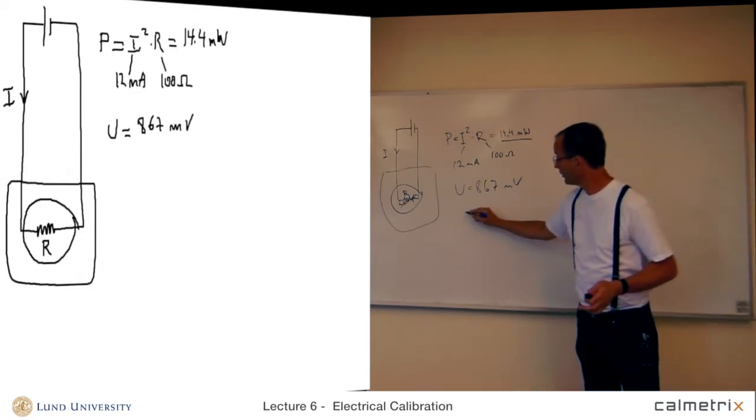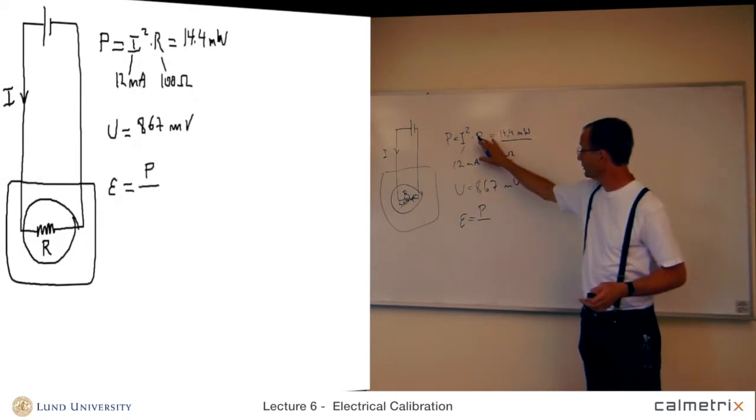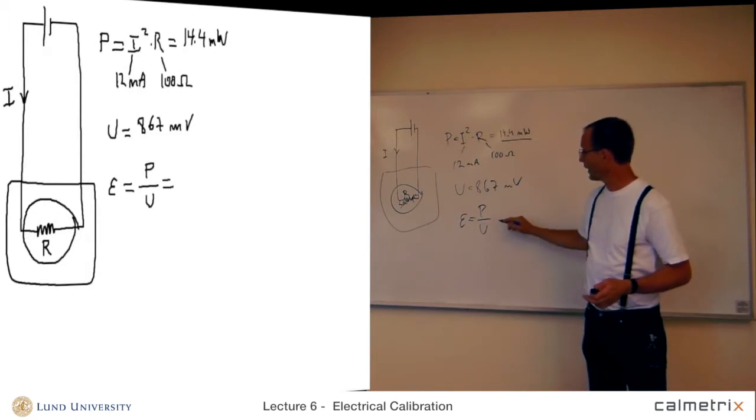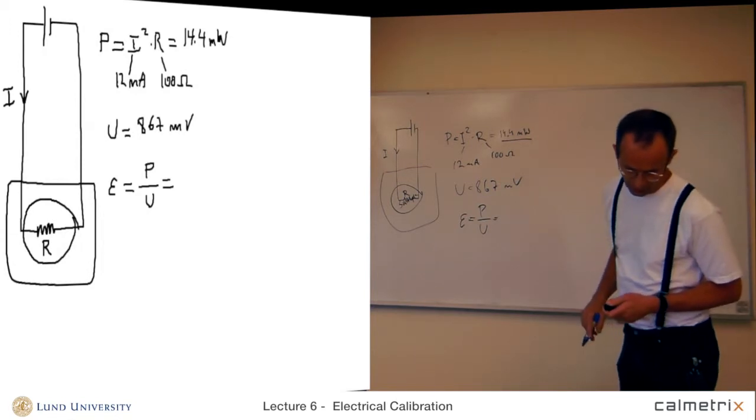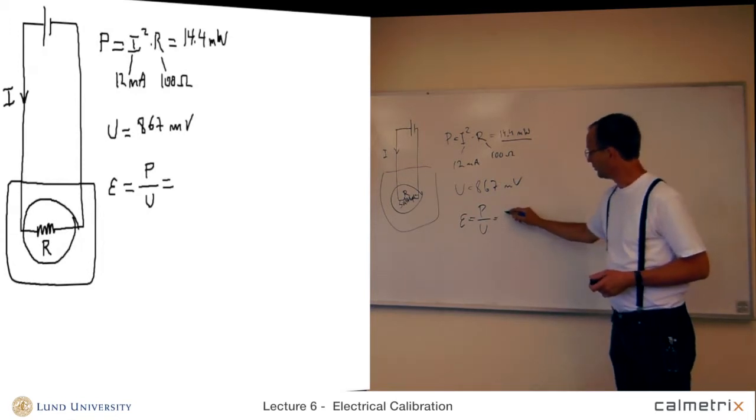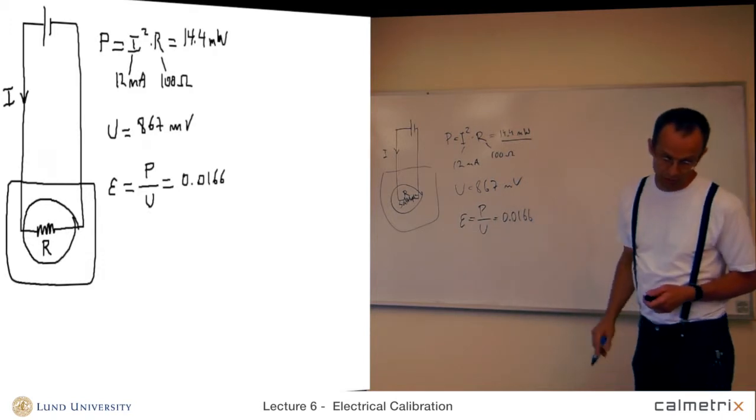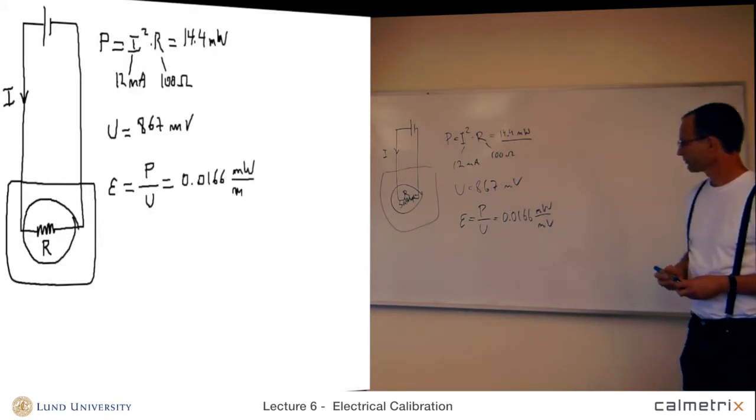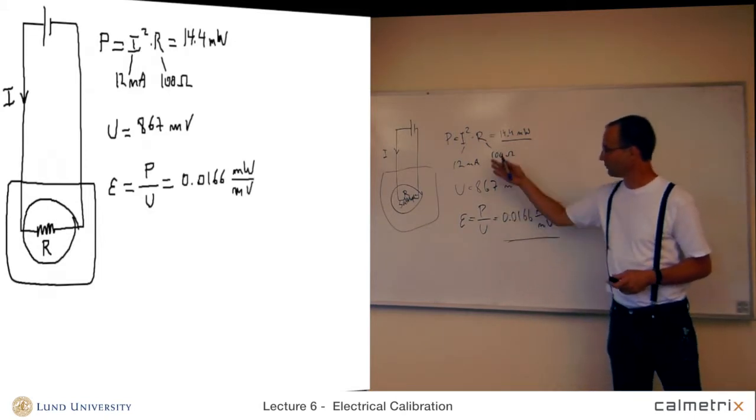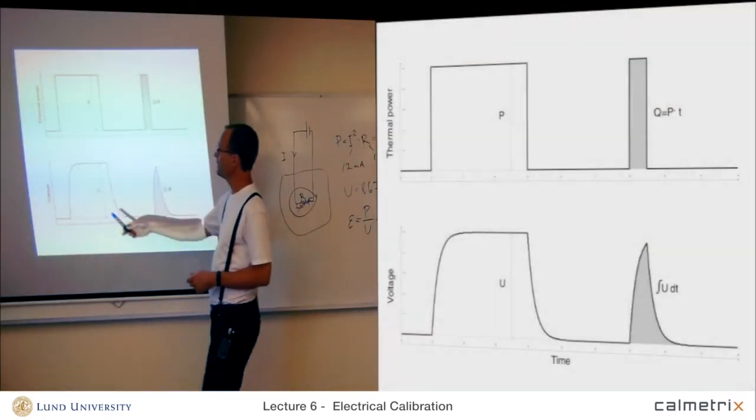Now, the calibration coefficient is the ratio of the thermal power produced and the voltage output. And in this case, if we divide these values, we will get 0.0166. And that is in units of milliwatt per millivolts. So, here we have found the calibration coefficient from an electrical calibration. Electrical steady state calibration, from this steady state.